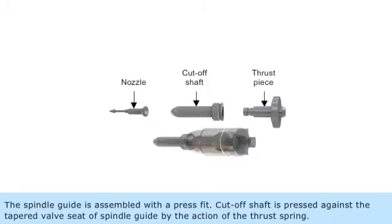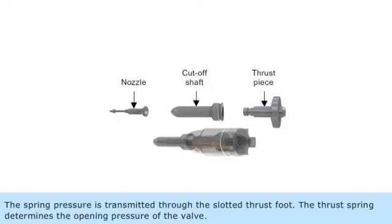The spindle guide is assembled with a press fit. The cutoff shaft is pressed against the tapered valve seat of the spindle guide by the action of the thrust spring. The spring pressure is transmitted through the slotted thrust foot. The thrust spring determines the opening pressure of the valve.